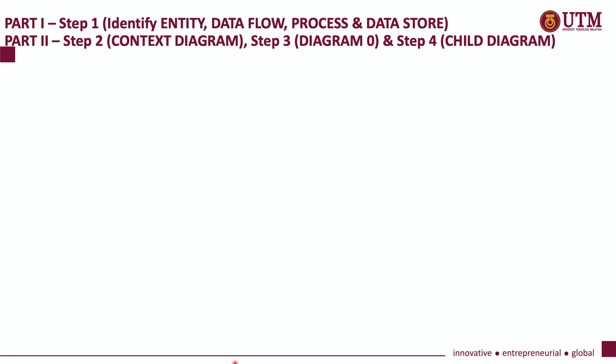Before we continue with this topic, I would like to remind everyone what we have discussed before. In video part 1, we discussed the first step in creating a data flow diagram: identifying entity, data flow, process, and data store. In the second part video, we discussed step 2, creating a context diagram; step 3, creating diagram 0; and step 4, creating a child diagram.